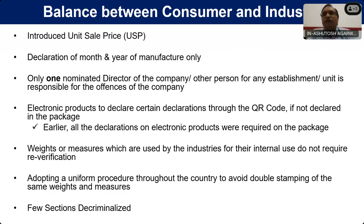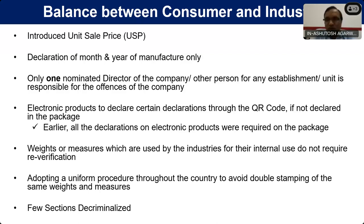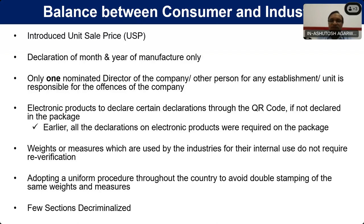We have given a provision for electronic products to declare few of the declarations through QR codes. Earlier for all other products, all declarations had to be made on the package commodity itself. But for electronic products, few of the declarations can be given through the QR code. There are some measures used by industries that do not need to be re-verified again and again if they are not impacting any transaction or production. We have also decriminalized a few sections of the Act which were not directly impacting the consumer or the economy.